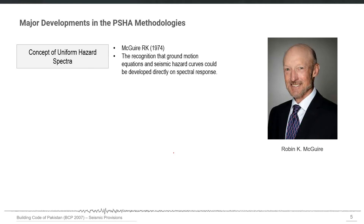In 1974, there was another major development: the concept of the uniform hazard spectrum. The recognition that ground motion prediction equations and seismic hazard curves could be developed not only for peak ground acceleration but also for structural response. This concept was introduced and attributed primarily to Robin McGuire.